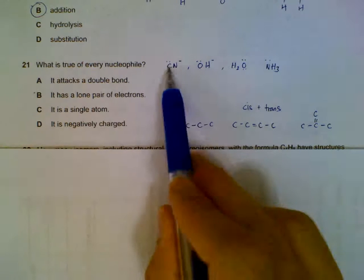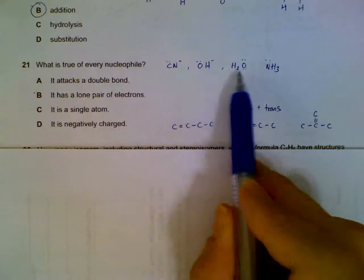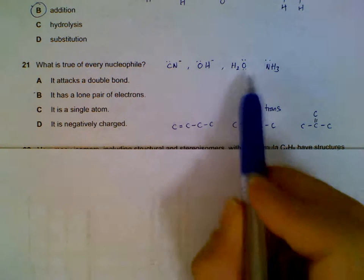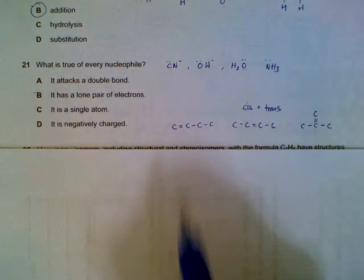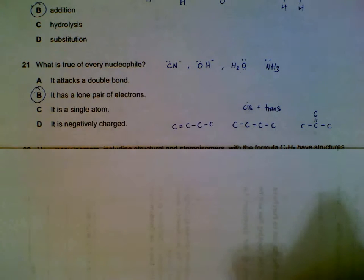21. What is true of every nucleophile? We have some nucleophiles here. And we can see that they not necessarily have to be negatively charged. We have neutral substance like water and ammonia. But what they must have will be a lone pair of electrons, so that they can go and attack partial positive carbons.